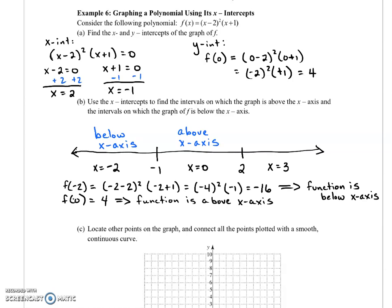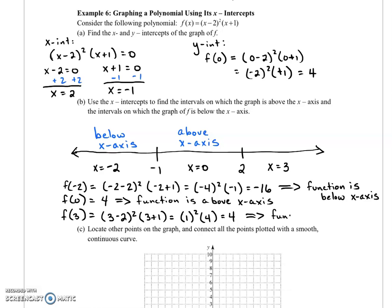And now let's evaluate the function at x equals 3. So we have (3 - 2)² times (3 + 1). So 1² times 4 is a positive 4. So since it's positive, the function is still above the x-axis.